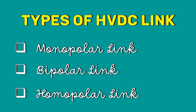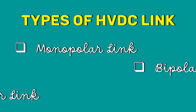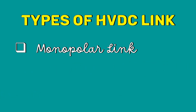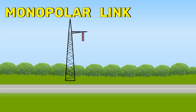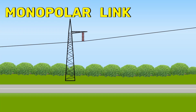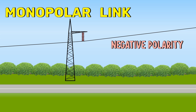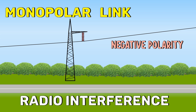Let's first start with the monopolar link. Mono means one. As the name indicates, the monopolar link has only one conductor. The conductor used is of negative polarity in order to reduce radio interference.